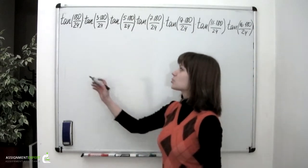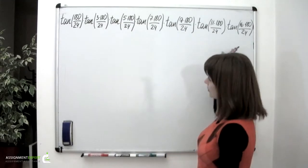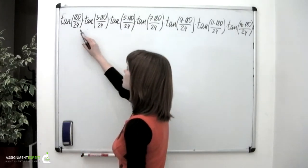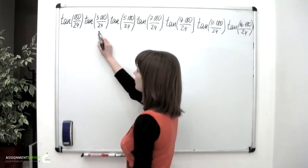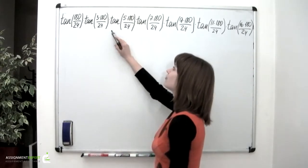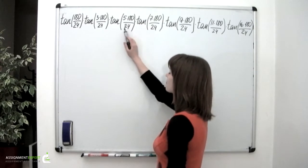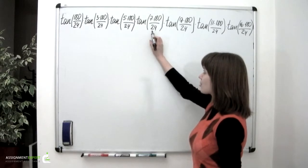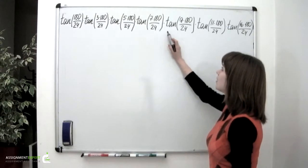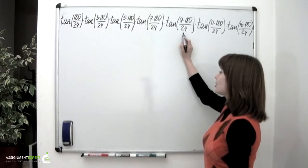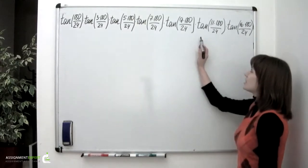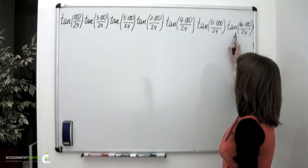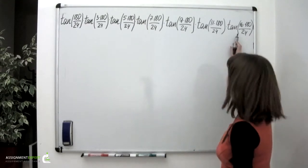In this task, we need to calculate the expression which we have on the board: tangent of 180 over 24, multiplied by tangent of 3 times 180 over 24, multiplied by tangent of 5 times 180 over 24, multiplied by tangent of 7 times 180 over 24, multiplied by tangent of 9 times 180 over 24, times tangent of 11 times 180 over 24, and finally times tangent of 16 times 180 over 24.